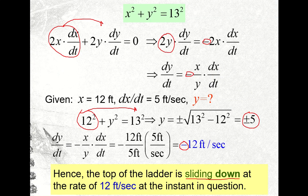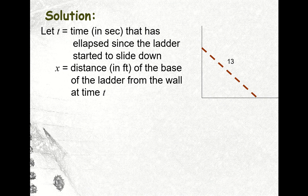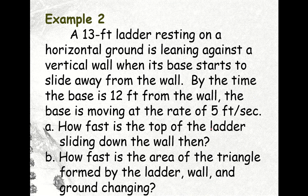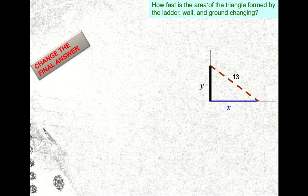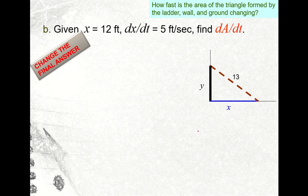Take note that the problem gives us two questions — we just solved Part a. Now for Part b: how fast is the area of the triangle formed by the ladder, wall, and ground changing? We refer to the same illustration. Given for Part b: x equals 12 feet, dx/dt equals 5 feet per second, and we are asked to find dA/dt, the rate of change of the area of the triangle formed by the wall, ground, and ladder.